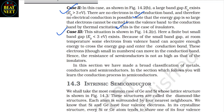Case 3 (figure 14.2c): Here a finite but small band gap (Eg < 3 eV) exists. Because of the small band gap, at room temperature some electrons from the valence band can acquire enough energy to cross the energy gap and enter the conduction band. These electrons, though small in numbers, can move in the conduction band; hence the resistance of semiconductors is not as high as that of the insulators. In the section which follows you will learn the conduction process in semiconductors.